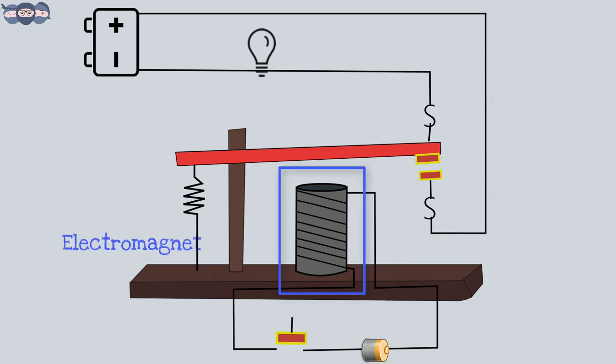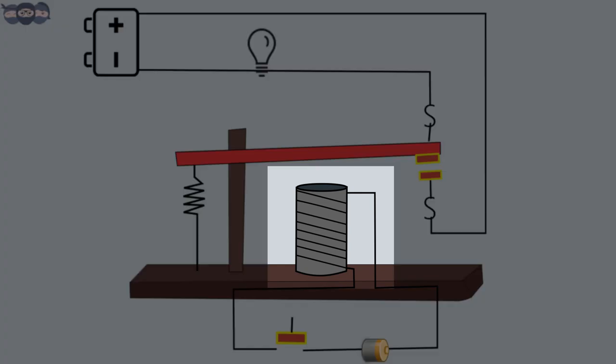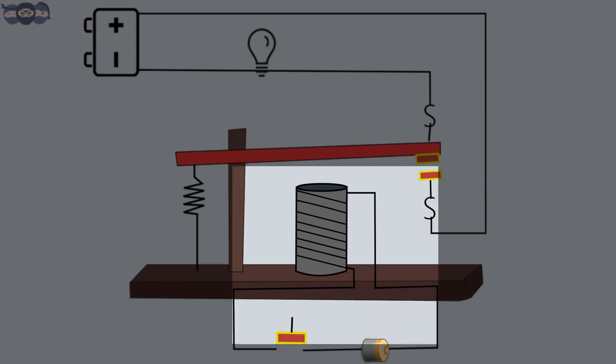Electromagnet, armature, and spring. Let's first understand an electromagnet. We take a metal rod and wind a conductive wire, usually insulated copper, around it. It is powered using a battery.